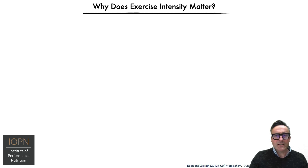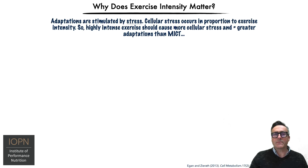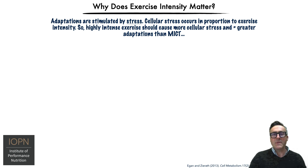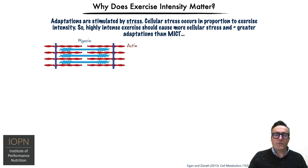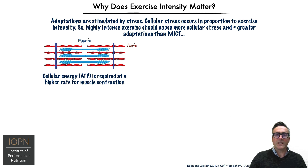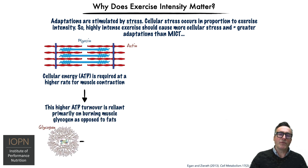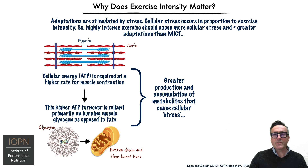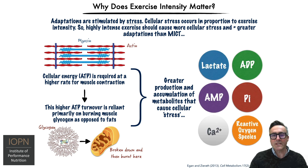Why does the intensity of exercise matter? Adaptations are stimulated by stress, and cellular stress occurs in proportion to exercise intensity. So highly intense exercise, such as in interval training, should cause more cellular stress and therefore greater adaptation than medium intensity continuous training. Cellular energy — adenosine triphosphate — is required at a higher rate for muscle contraction, and this higher ATP turnover relies primarily on burning muscle glycogen as opposed to fats, resulting in greater production and accumulation of metabolites that cause these cellular stresses.